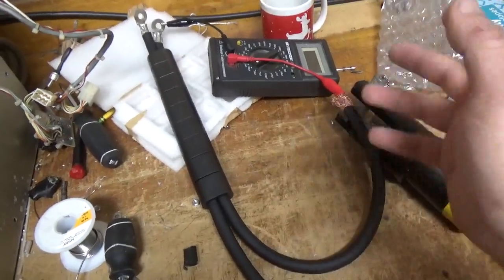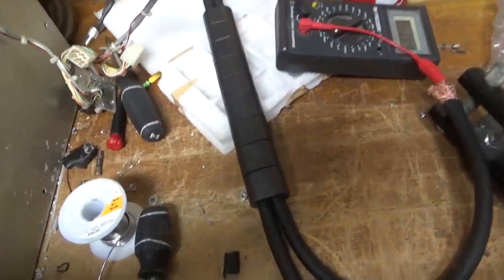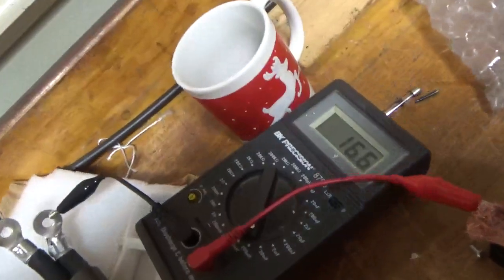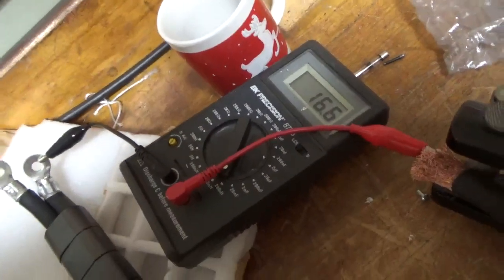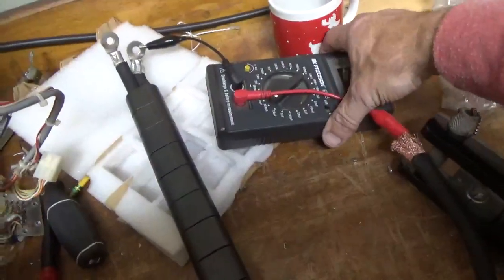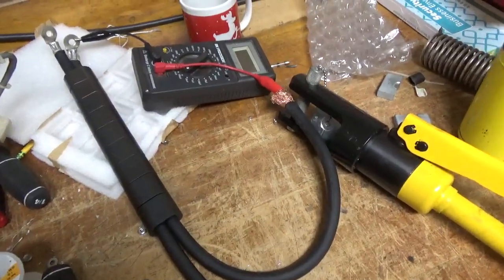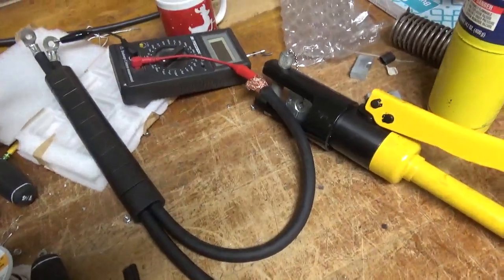Ring terminals again, crimp, solder, heat shrink. So I'll show you what I have. It's roughly 16.6 micro-Henrys. I zeroed it out prior. So I will get back on this and I'll show you it when it's all done and installed.